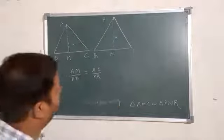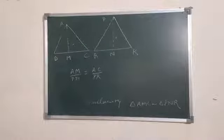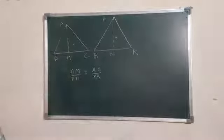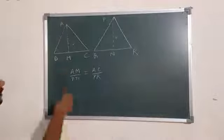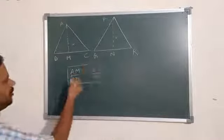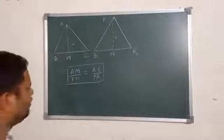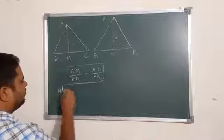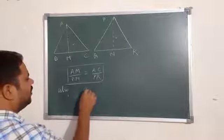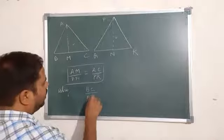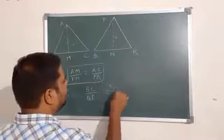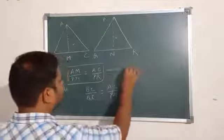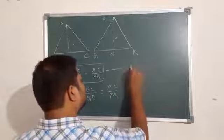Also, since triangle ABC is similar to triangle PQR, we have BC upon QR equals AC upon PR. This is equation number 2. And from the similarity of triangles AMC and PNR, AM/PN equals AC/PR — this is equation number 3. From equations 2 and 3, we get AM upon PN equals BC upon QR. This is equation number 4, an important equation.